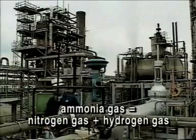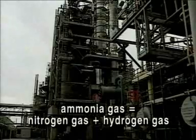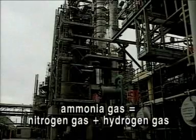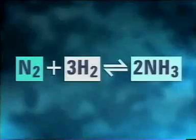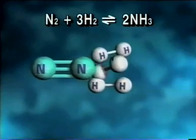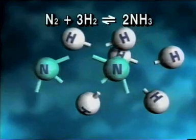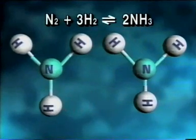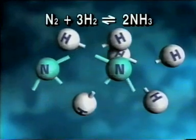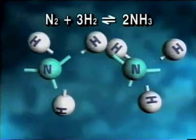Ammonia gas is made industrially by mixing nitrogen and hydrogen gases in a container under pressure. One nitrogen molecule and three hydrogen molecules react to form two molecules of ammonia. But reduce the pressure and the ammonia gas will revert back into nitrogen and hydrogen gas — the reaction is reversible depending on the pressure.